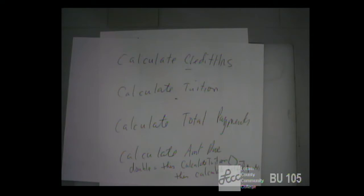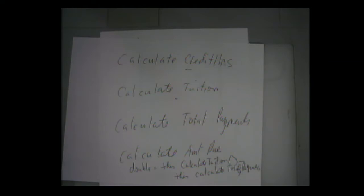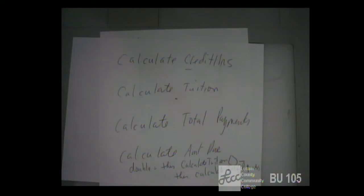The problem is, if you have a function that does two things — like calculate tuition and print it out — you have to do them both as a package; you can't do one without the other. So make your functions do one very small specific task. If you need to call two functions to do the whole task, you call two functions. Breaking it down makes little chunks that you can call and piece together in any sequence.